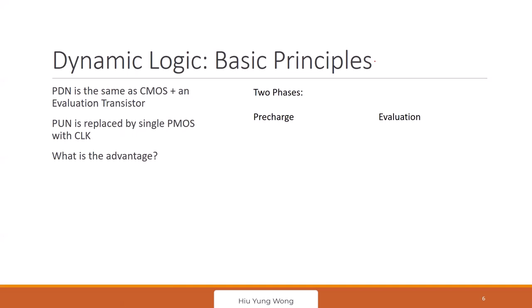In CMOS, for example a two-input NAND gate, how many transistors do we need? Four, right. And if it is an n-input gate, how many do you need? 2n transistors — n for the pull-up network and n for the pull-down network.